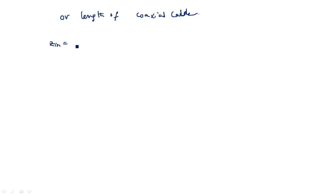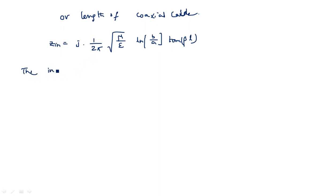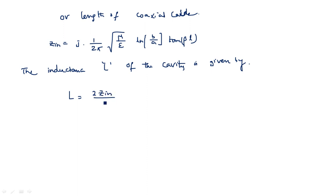Substituting Z₀ into Z_in gives: Z_in = j · (1/2π)√(μ/ε) · ln(b/a) · tan(βl). The inductance L of the cavity is given by L = 2Z_in/ω = (1/πω) · ln(b/a) · tan(βl), derived from transmission line theory.